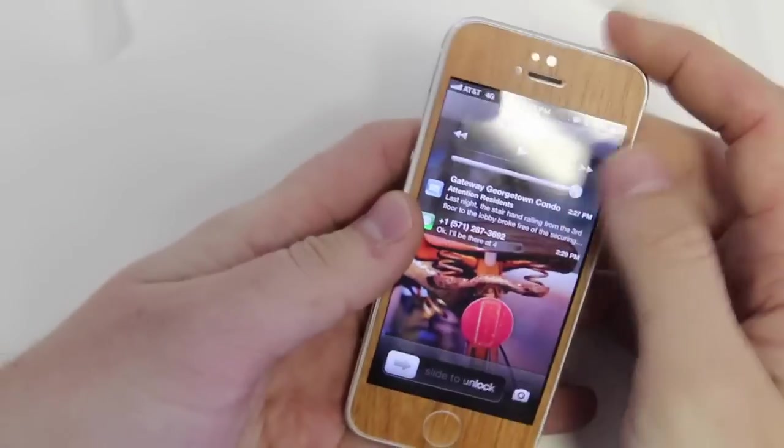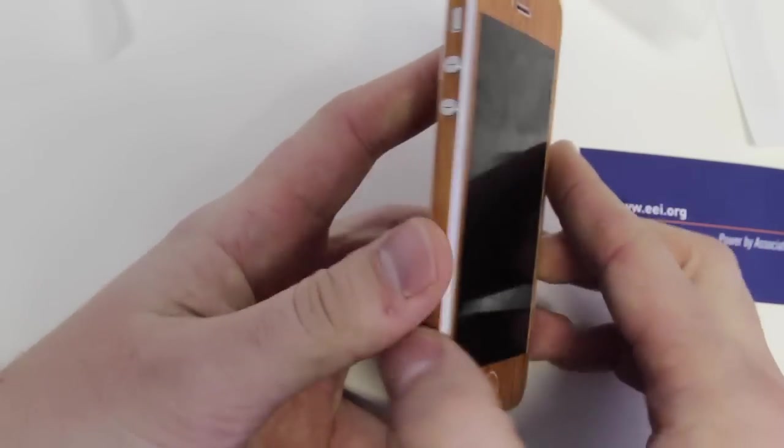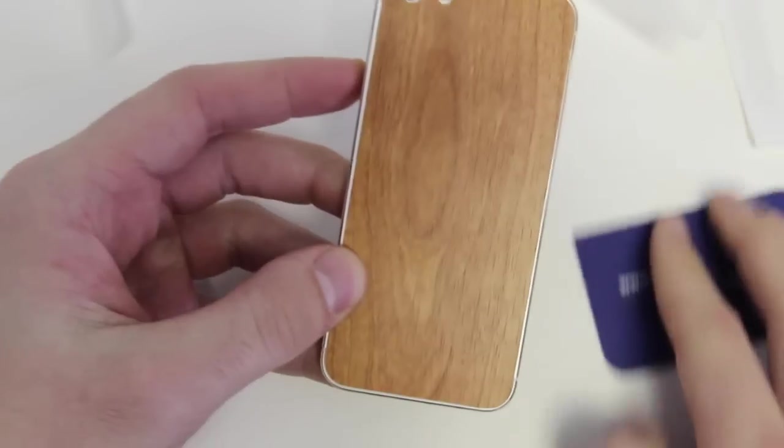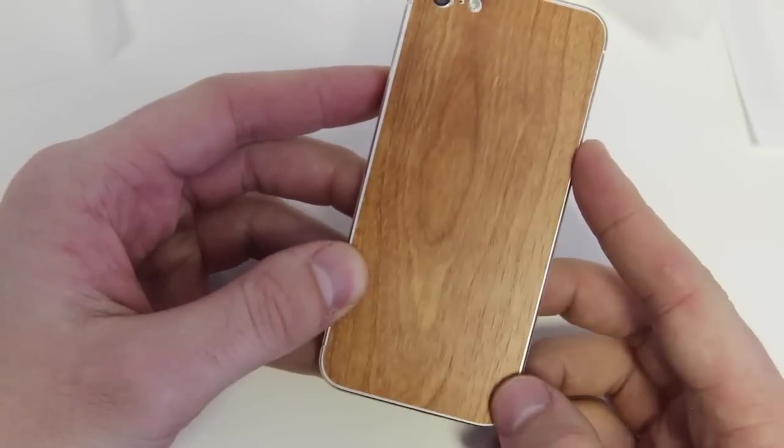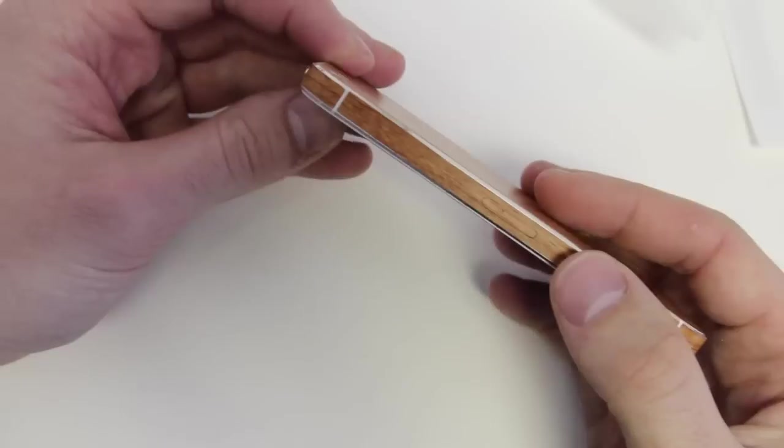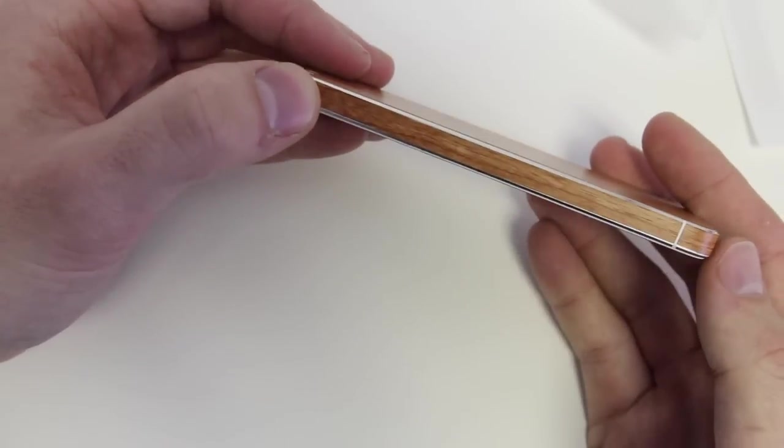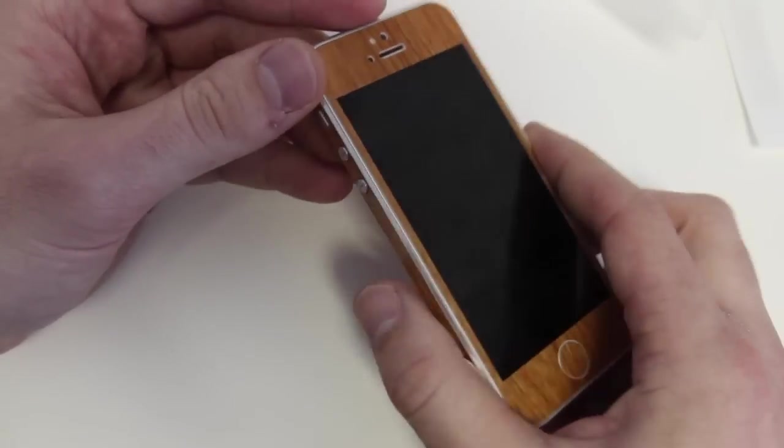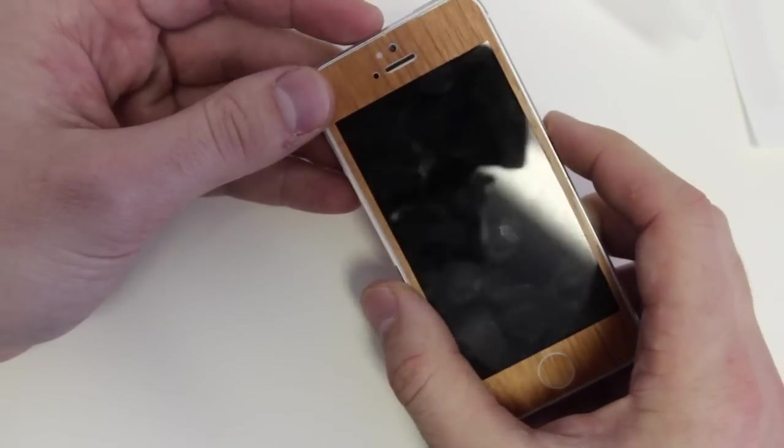Looks really cool. So it doesn't obstruct you from actually pressing the button. And everything looks pretty sweet. So that is how to put on the full wrap on the iPhone 5, which you can find on our website, www.gadgetwraps.com.